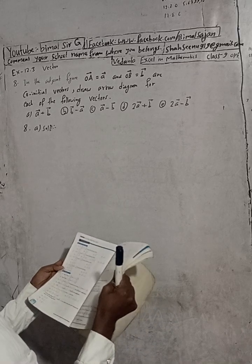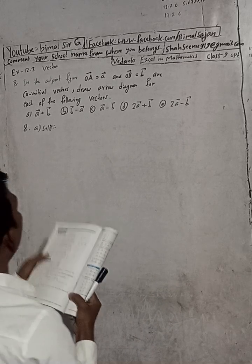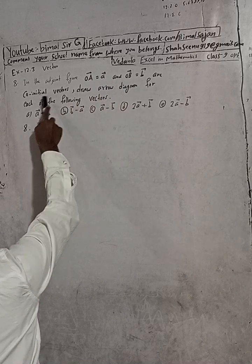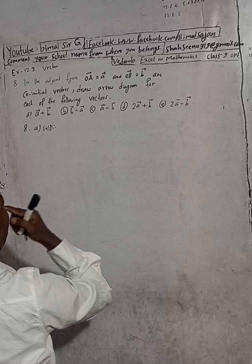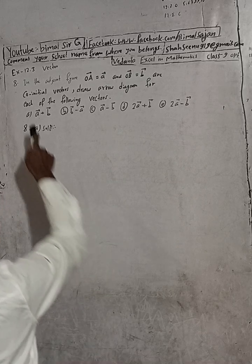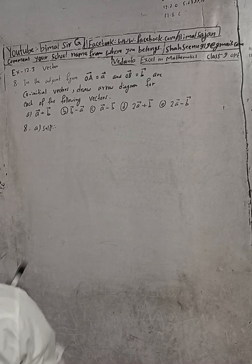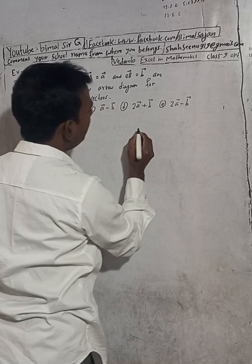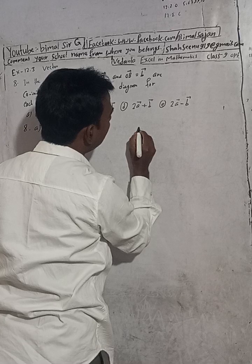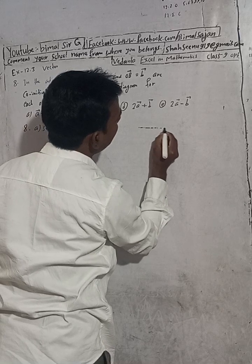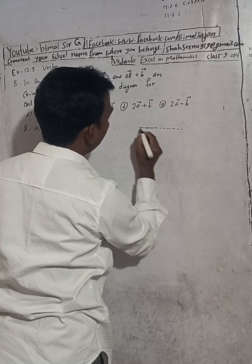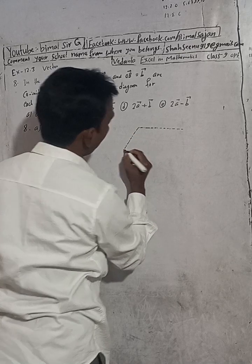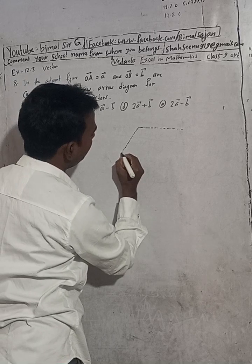I'm drawing the figure. OA vector equals A vector, OB vector equals B vector - they are co-initial vectors. We need to draw arrow diagrams. I will draw a parallelogram. I'm drawing parallel lines to create the parallelogram.